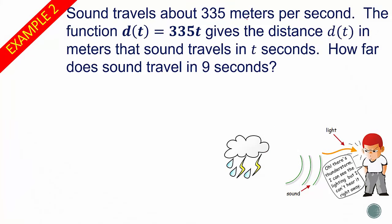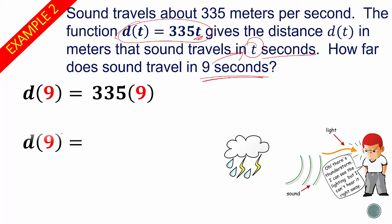Sound travels about 335 meters per second. The function d(t) equals 335t gives the distance d(t) in meters that the sound travels in t seconds. How far does the sound travel in 9 seconds? So we're going to take, and this is t seconds, so our variable is t. We want to know how far the sound traveled in 9 seconds, so we know that this 9 is going in for t because it's time. So 335 times 9, just write it d(9). So anywhere you see a t in this, we're rewriting it with 9. So d(9) equals 3,015 meters. Pretty simple.